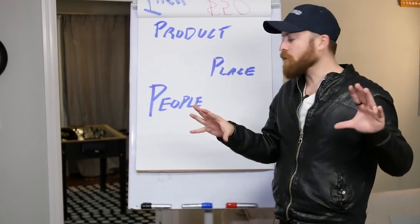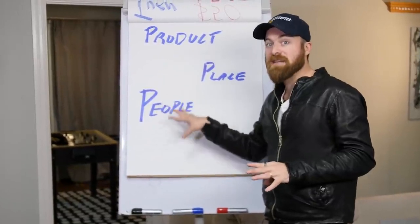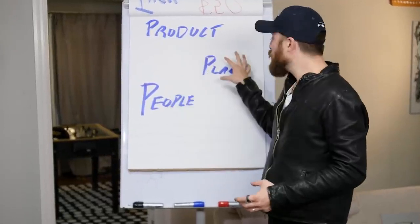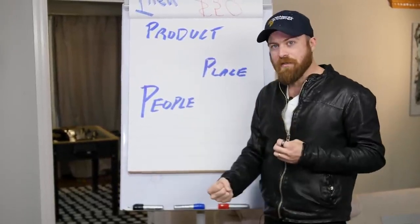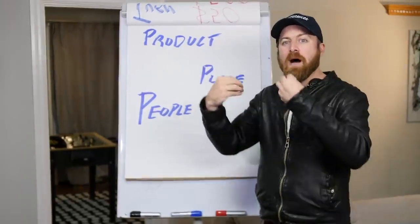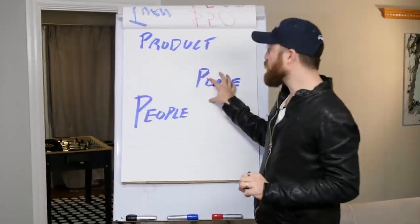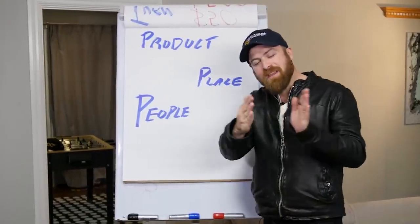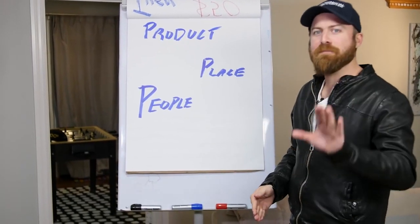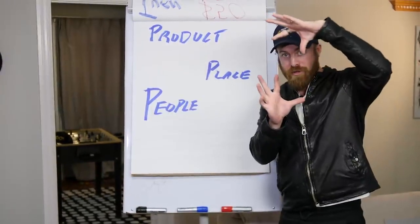We're going to use Google Ads to reach people, to sell a product. We're going to take them from Google to a place where we can sell them, and then we need a product that will pay us commissions when sold — which will be an affiliate offer. This three-step system is everything you need. Make sure to sit down at a desktop computer or laptop.